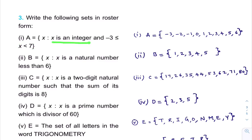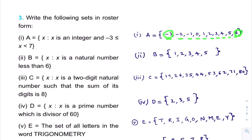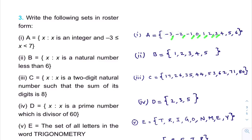All integers lie between minus 3 and 7. Since less than or equal to is there, minus 3 is included. So set A equals {minus 3, minus 2, minus 1, 0, 1, 2, 3, 4, 5, 6}. All the elements are listed and separated by commas within brackets. This is the answer for the first question.